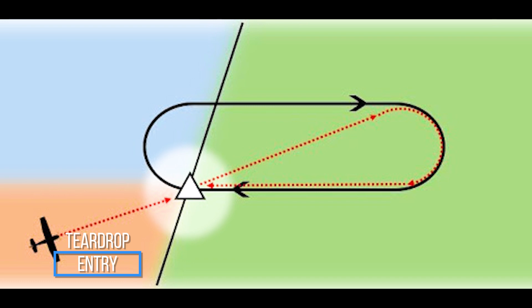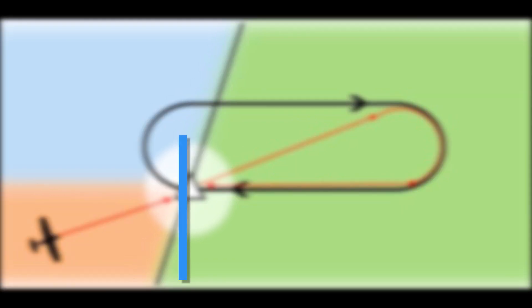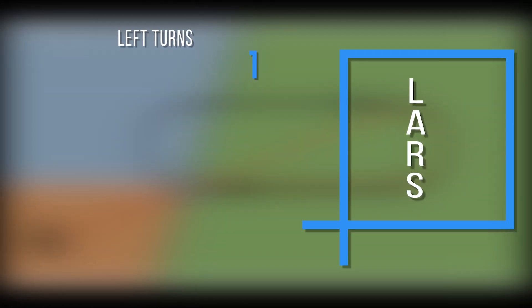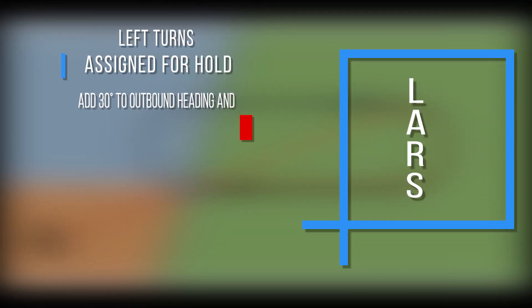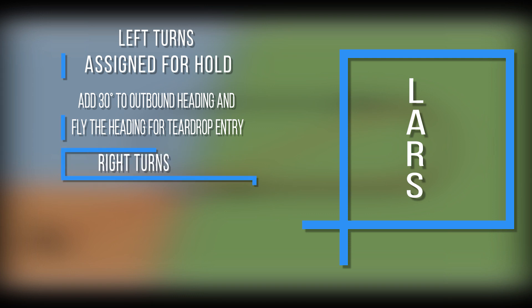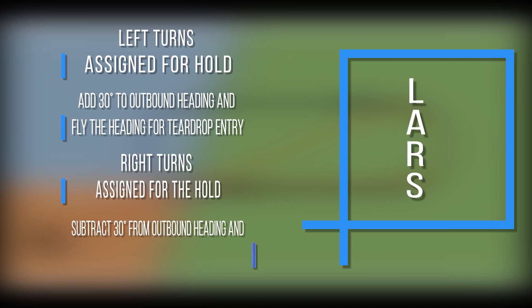A helpful acronym to remember which heading should be flown after passing the fix is LARS. Left turn assigned for hold: add 30 degrees to the outbound heading and fly that heading for teardrop entry. Right turn assigned for the hold: subtract 30 from the outbound heading and fly that heading for teardrop entry.